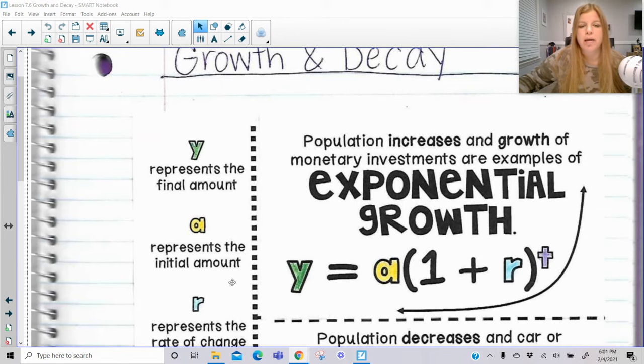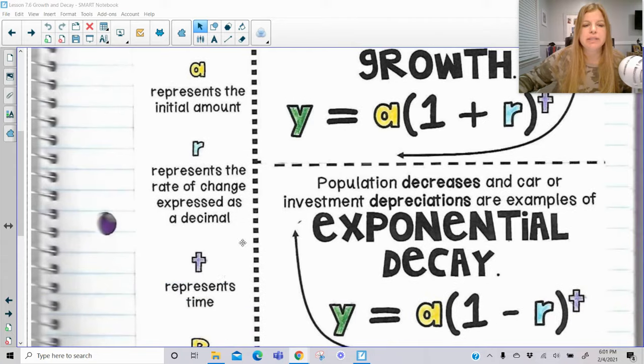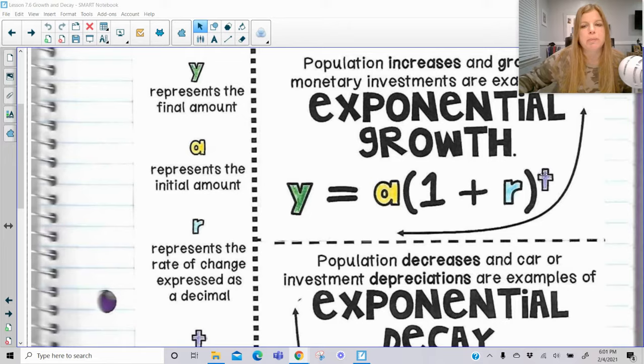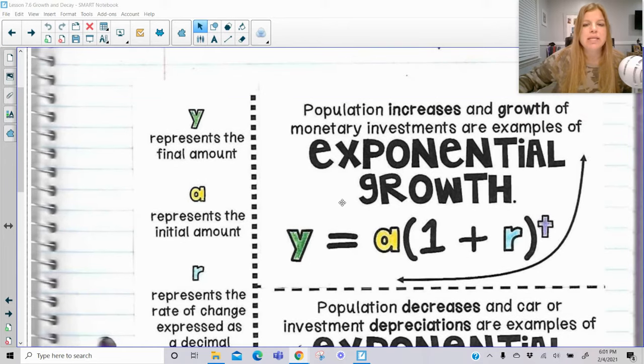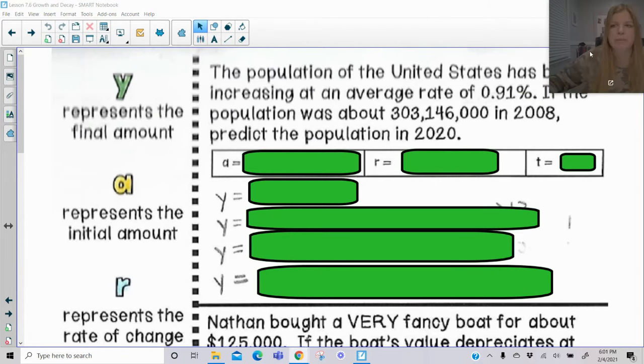Then we do 1 plus r, and r represents the rate of change expressed as a decimal. So usually when we're given rates we're given percents. Remember to go from percent to decimal, we move the decimal two spots to the left. And then we have the decimal form. And then t is going to represent time. So however many years is what we plug in for t. So let's take a look at using this formula for two exponential growth problems. Sorry that it's a little blurry at the top here. My apologies on that.